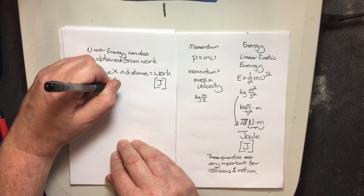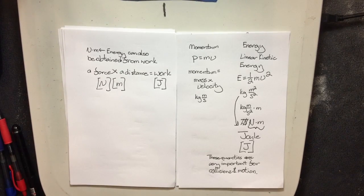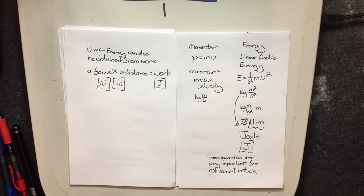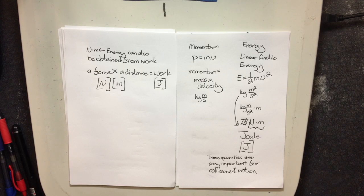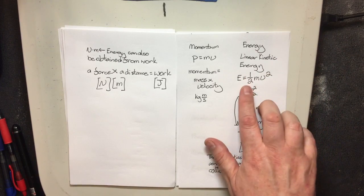Force is in newtons, distance is in meters, so force multiplied by distance gives units of energy. As an example, this book has a certain amount of mass. Because it's under the influence of gravity, I'm experiencing a force on my hand equal to mass times gravity — Mg. If I take that Mg and push it up a certain distance, the amount of work I've done on that object is Mg times that height change.